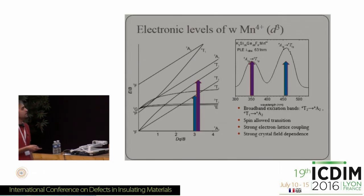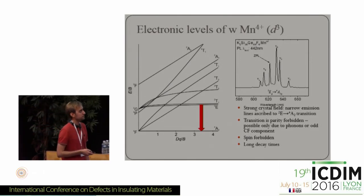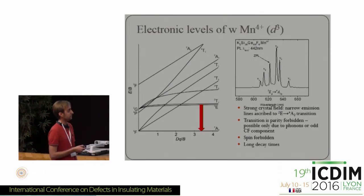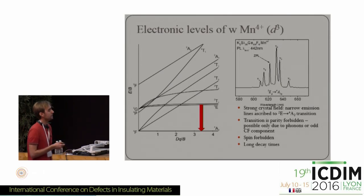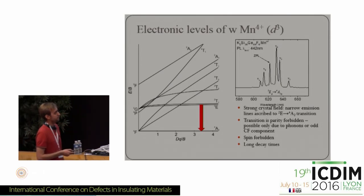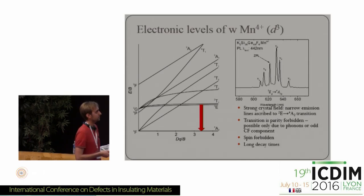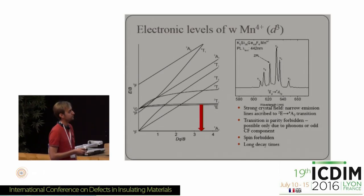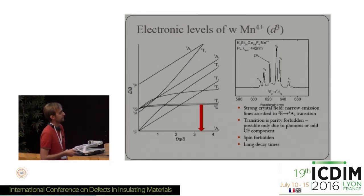The energy is dependent on the DQ crystal field strength parameter, as seen from the slope of the curves in the Tanabe-Sugano diagram. The emitting state in manganese 4+ is always the 2E state, meaning we are above the crossover in the diagram. The transition is parity forbidden and spin forbidden, so it has long decay times, and emission is enabled mostly by phonons or odd crystal field components, where we can get the zero phonon line.